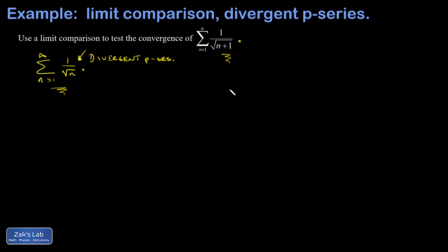And if that settles down to some finite number, then we'll conclude that both series diverge. So here is our large n limit of the ratio of the terms in our series to the terms in this divergent p-series. And if you divide by one over root n, it's the same as multiplying by root n over one.